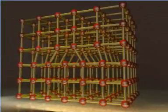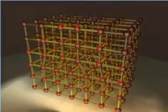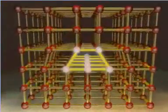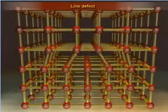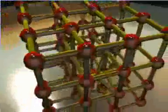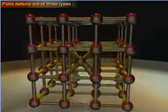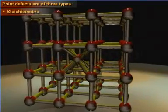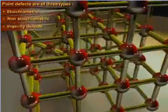On the other hand, a defect arising due to the irregularity in the arrangement of the constituent particles across a row of lattice points is referred to as the line defect. In this module, we are going to explore the point defects, which are of three types: stoichiometric, non-stoichiometric, and impurity defects.